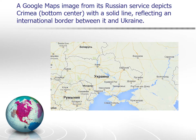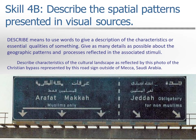Let's take a look at skill 4B: describe the spatial patterns presented in visual sources. When I pose questions throughout these skill category PowerPoints, I want you to go back into the discussion boards in Canvas and respond to these prompts to see how you do, then use that as a role model for what you might have your students do in the classroom. Describe means to use words to give a description of the characteristics or essential qualities of something — give as many details as possible about the geographic patterns and processes reflected in the associated stimuli.